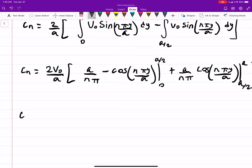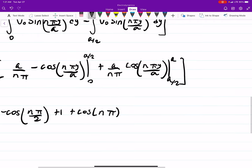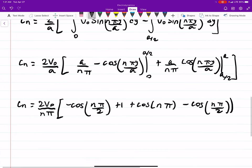Okay, so I can see that we can factor out that. If we factor out the a, that'll drop in the denominator, and we get an nπ here, minus cosine of nπ over 2. That's if we evaluated at a over 2. So the a drops, and you get your 2, plus 1, cosine of 0 is just plus 1, plus cosine of nπ. So that's if we evaluated at a, minus cosine of nπ over 2.